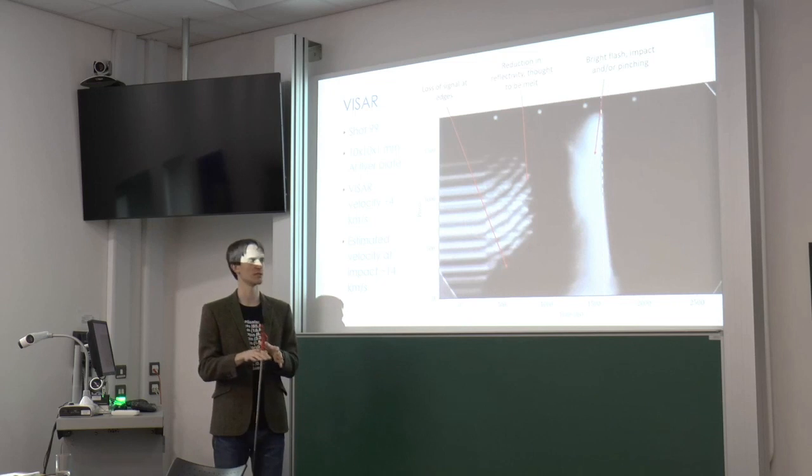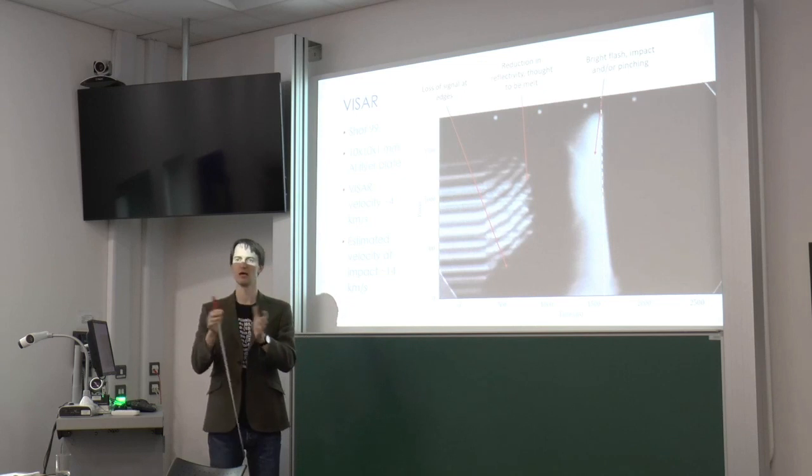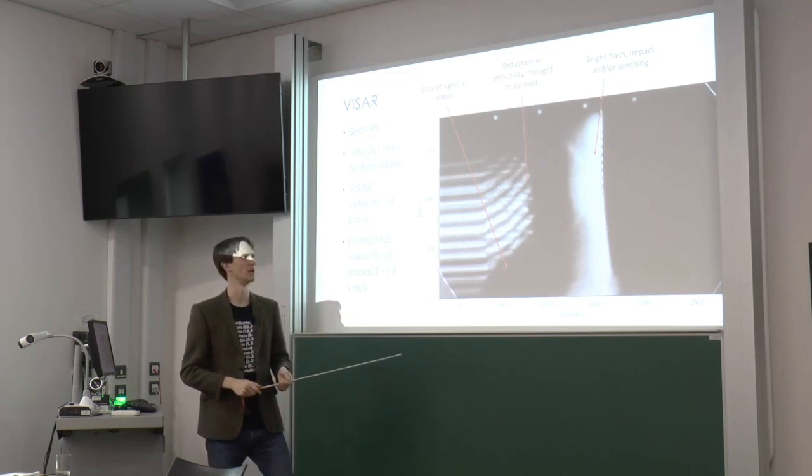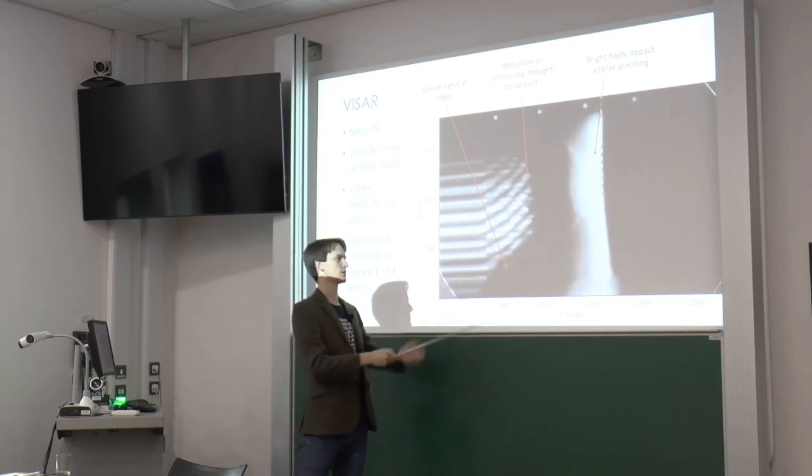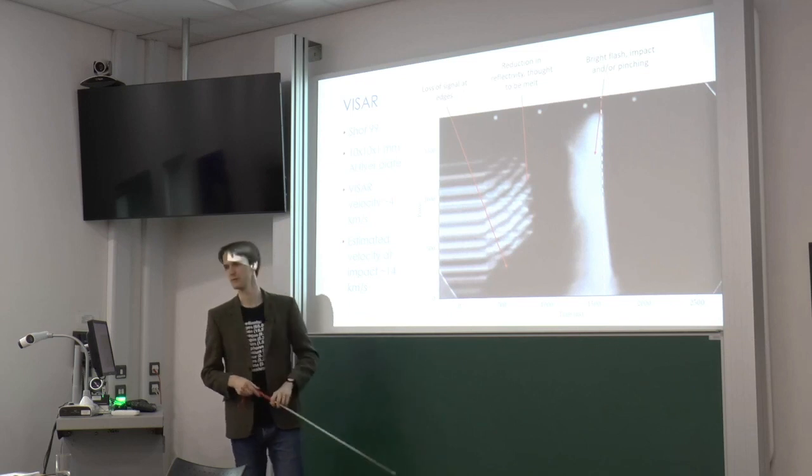Basically what we've seen in simulations is the projectile launches and there's side walls on the projectile. That helps stop the magnetic field from coming around the side until the projectile exits the chimney, we call it, at which point it can then pinch as all high current things eventually do. So we think we've seen that in the imaging and it looks like this flash is correlated with the pinching. And there's also a flash from impact. So it's hard to say what that is, but it's basically there in every shot we do.